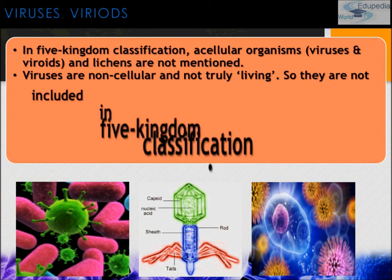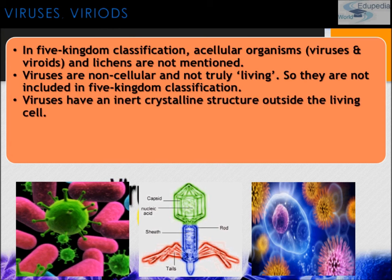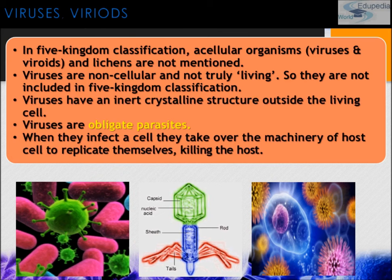Viruses are non-cellular and not truly living, so they are not included in the five kingdom classification. Viruses have an inert crystalline structure outside the living cell. Viruses are obligate parasites — when they infect a cell, they take over the machinery of the host cell to replicate themselves, and thus finally kill the host.